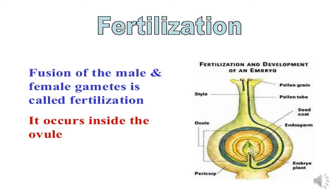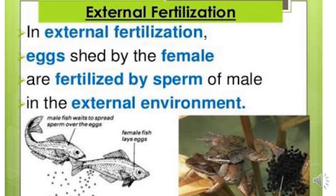Finally, we come to fertilization. Fertilization means the fusion of male and female gametes, and it occurs inside the ovule. Fertilization is basically of two types: external fertilization and internal fertilization. In external fertilization, eggs laid by the female are fertilized by sperm of the male in the external environment. The best examples are frogs and fishes — you can see the male fish spreads sperm over the eggs and the female fish lays the eggs.